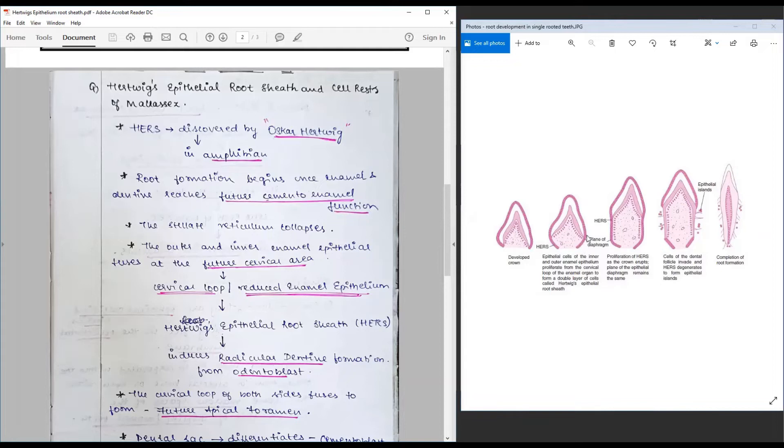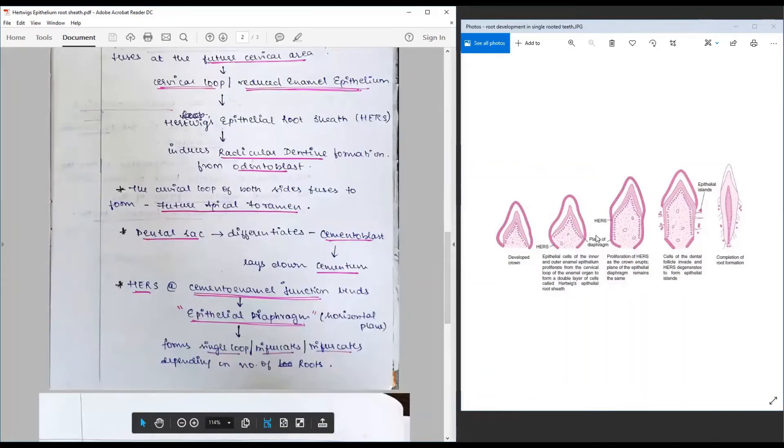The cervical loop forms as it grows towards the diaphragm. The cervical diaphragm, as it moves towards each other, it starts to elongate like this. The plane of diaphragm and future—at the end it forms the apical foramen. The dental sac surrounds the entire structure.